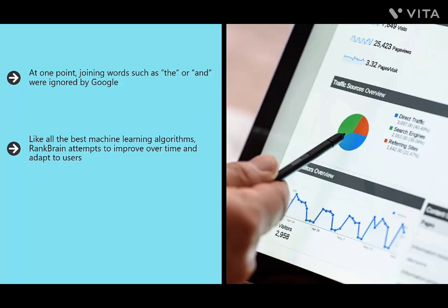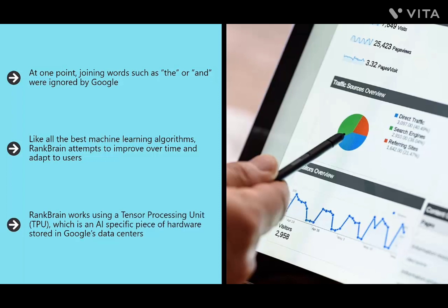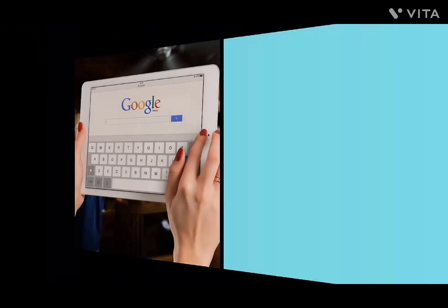Like all the best machine learning algorithms, RankBrain attempts to improve over time and adapt to users. It can see which results get clicked the most, and thereby know when it's doing well and when it's getting things wrong. As such, it is able to improve search results for any given keyword through algorithmic testing, helping to weed out low-quality content that attempts to game the system. RankBrain works using a Tensor Processing Unit (TPU), an AI-specific chip stored in Google's data centers.